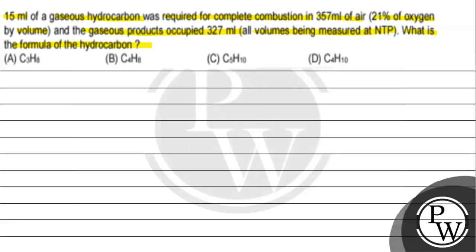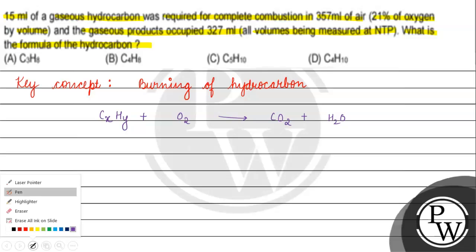Option A is C3H8, option B is C4H8, option C is C5H10, option D is C4H10. The key concept for this question is burning of hydrocarbon. The reaction is basically CxHy plus oxygen gives us CO2 plus water.